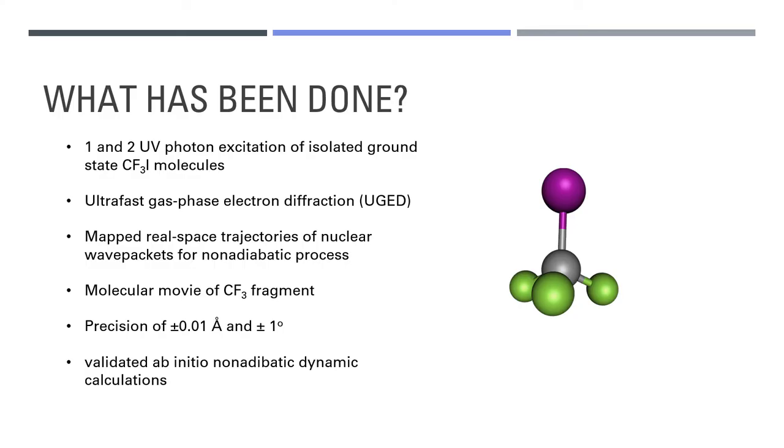So what has been done? Yang and his group have directly imaged the conical intersection dynamics and photodissociation dynamics of the CF3I molecules in the gas phase using ultrafast gas phase electron diffraction. This has allowed them to map out the real space trajectories of the nuclear wave packets through the ultrafast chemical process and they observed the bifurcation of these wave packets through the conical intersections.